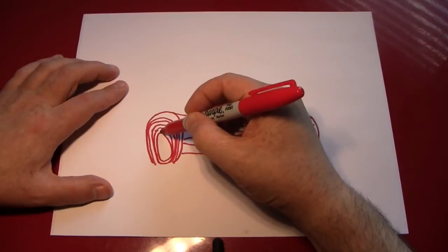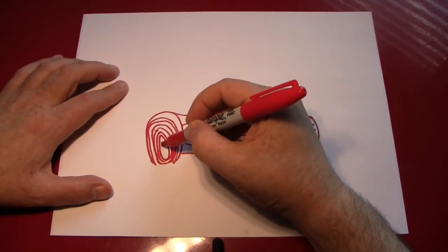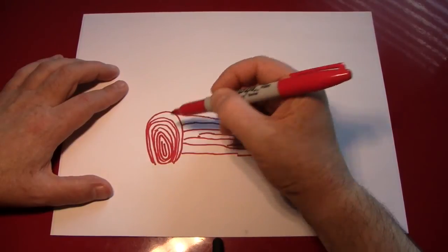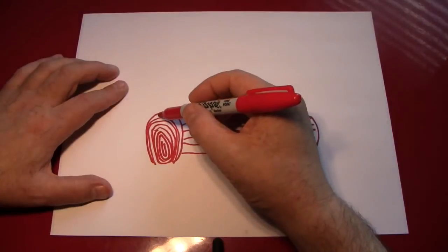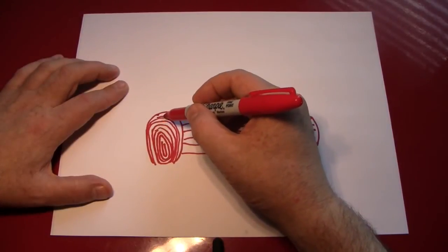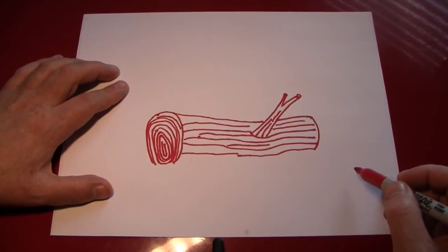Don't worry if some of the lines run into each other. If you've ever seen a cross section of a tree, you'll see that happens in nature all the time. Just do as many as you like until it's filled in. Like the bark, you can put in a little random line here and there to fill in the spaces.